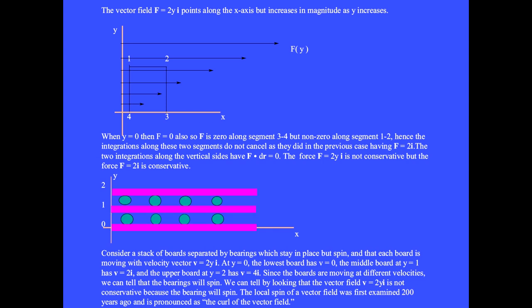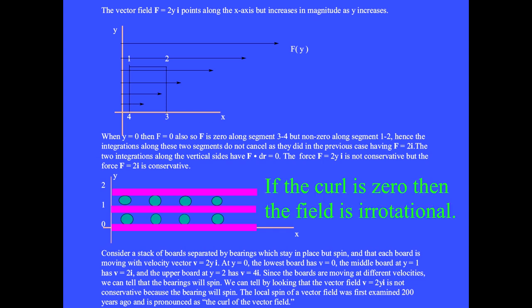Consider a stack of boards separated by bearings, where each board is moving with the vector velocity v equals 2y i-hat. At y equals 0, the lowest board has v equals 0. The middle board at y equals 1 has v equals 2i. Since the boards are moving at different velocities, the bearings will spin. We can tell by looking that the vector field v equals 2y i-hat is not conservative because the bearings spin. The local spin of a vector field was first examined 200 years ago and is called the curl or rotation of the vector field. If the curl is 0, then the field is irrotational.